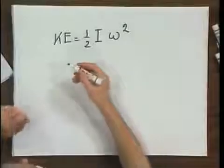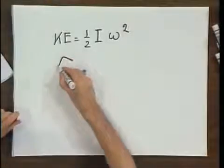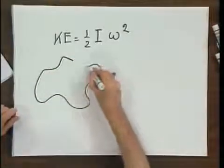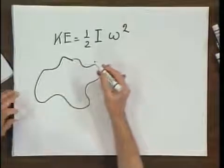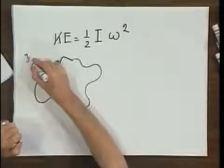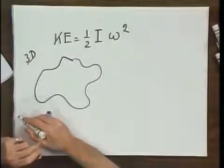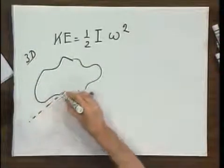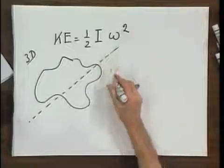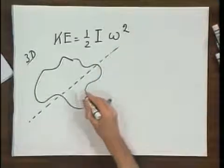So this is where moments of inertia come up. How is moment of inertia defined? Suppose we take a three-dimensional object, some crazy three-dimensional object. Think of it as being a potato — 3D — and I rotate this potato about an axis.